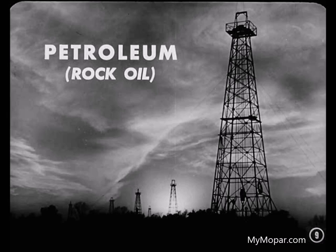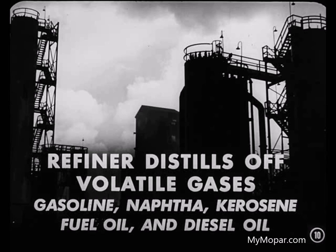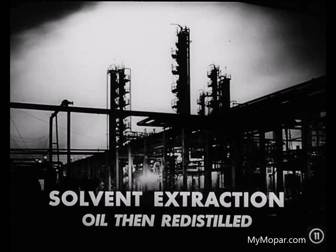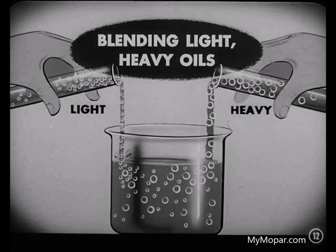The water usually is separated first. Then the refiner distills off the more volatile gases, the gasoline, naphtha, kerosene, and various grades of fuel and diesel oil. After that, there's a solvent extraction process which removes more undesirable products. The oil is then redistilled. Finally, there's a blending of light and heavy oils to produce lubricating oil of a certain viscosity.